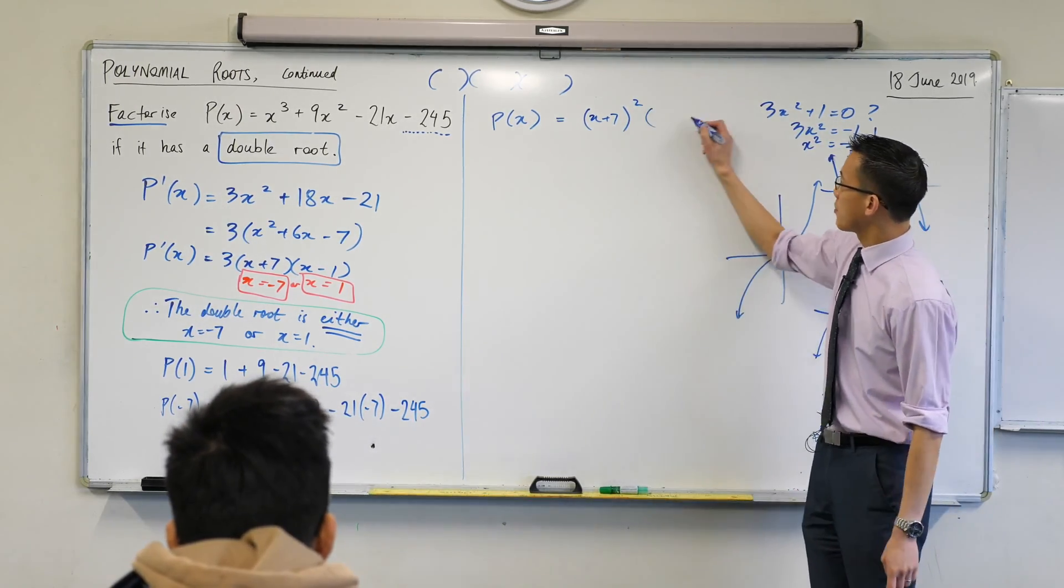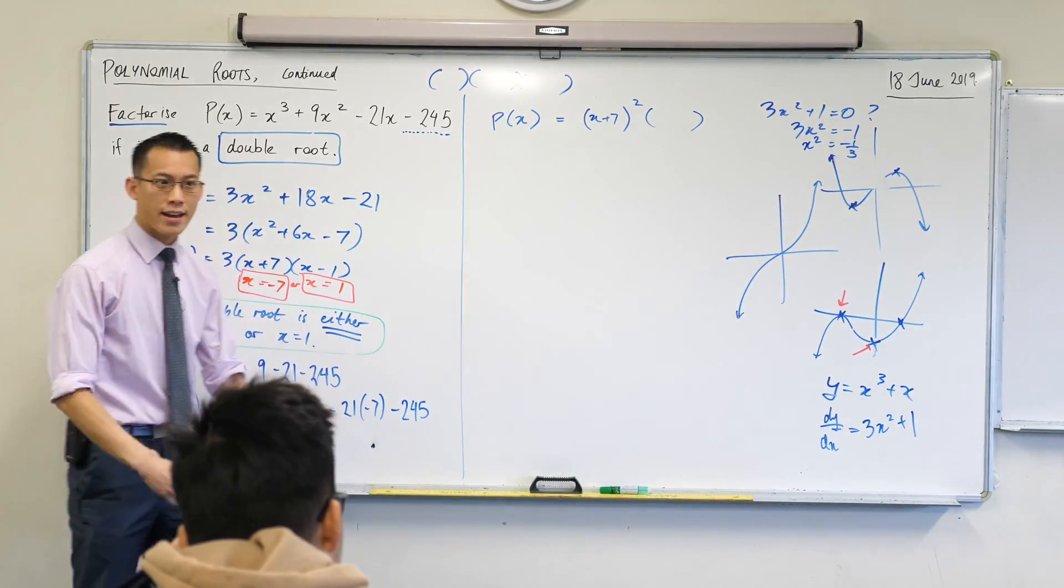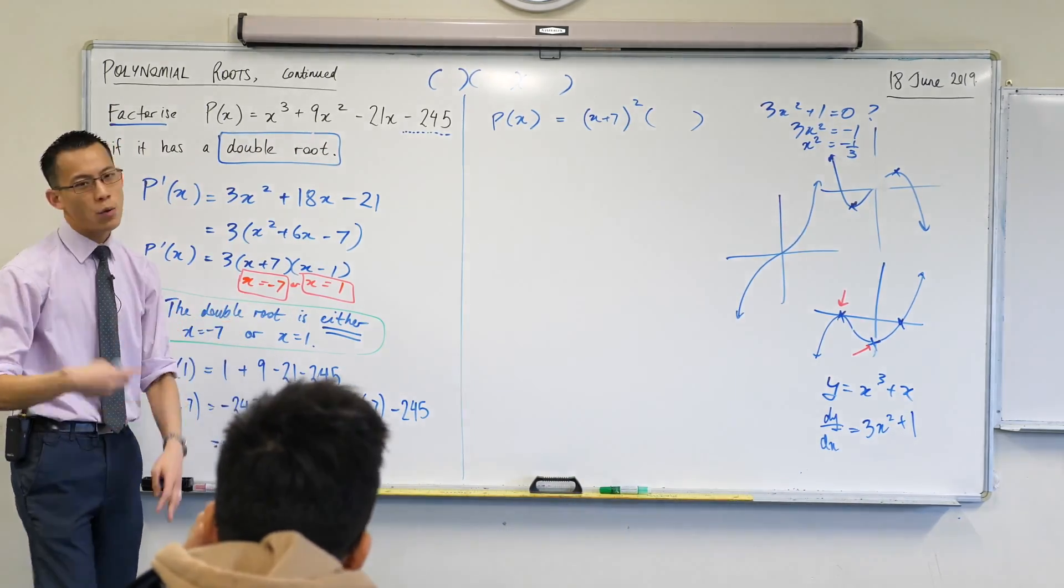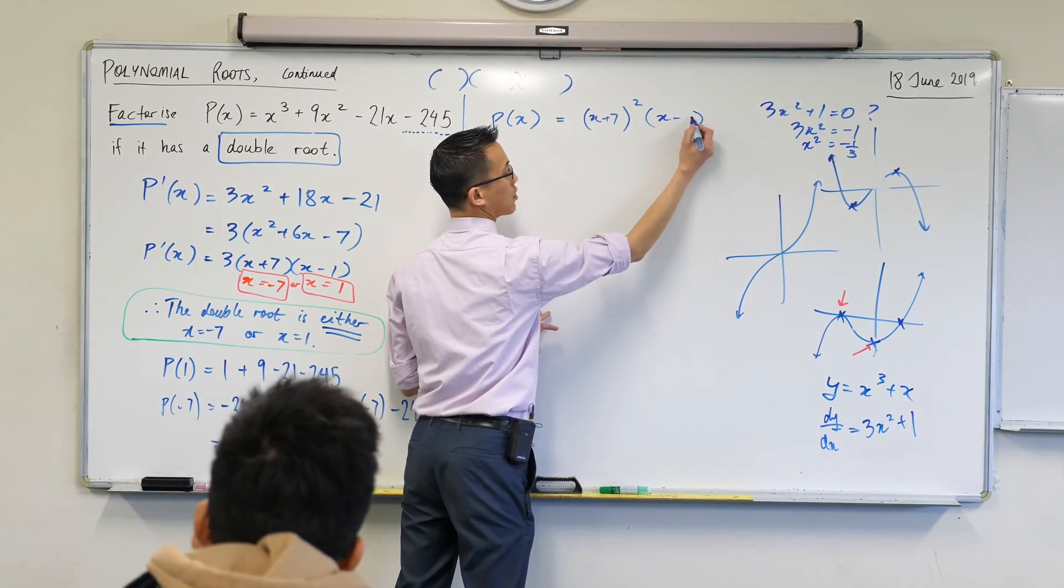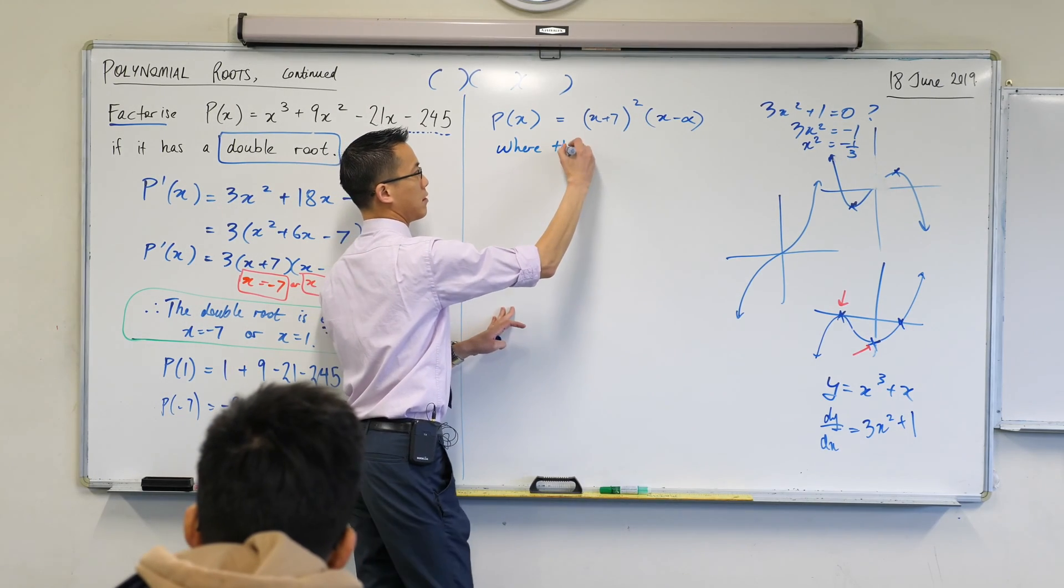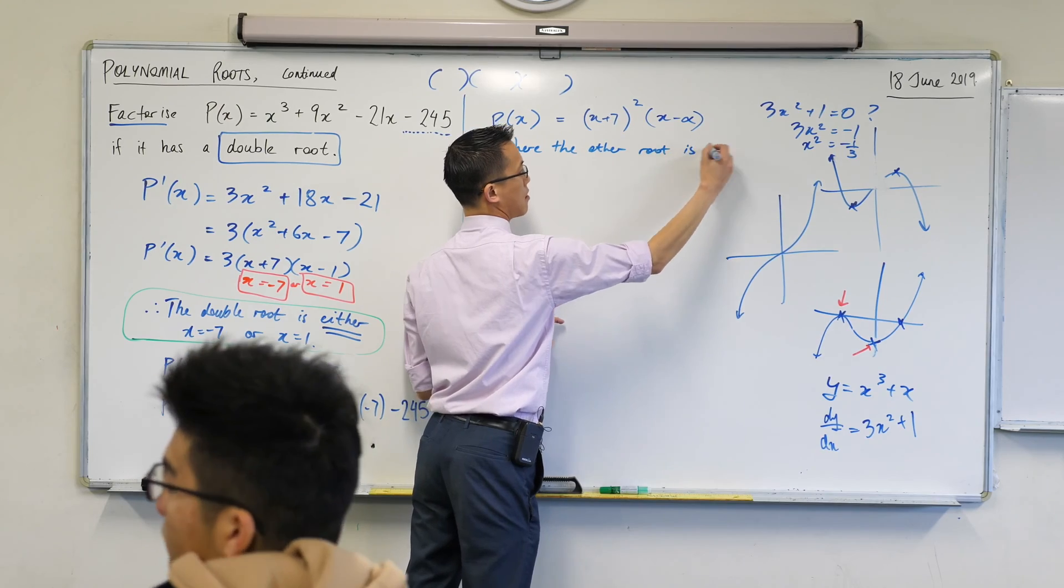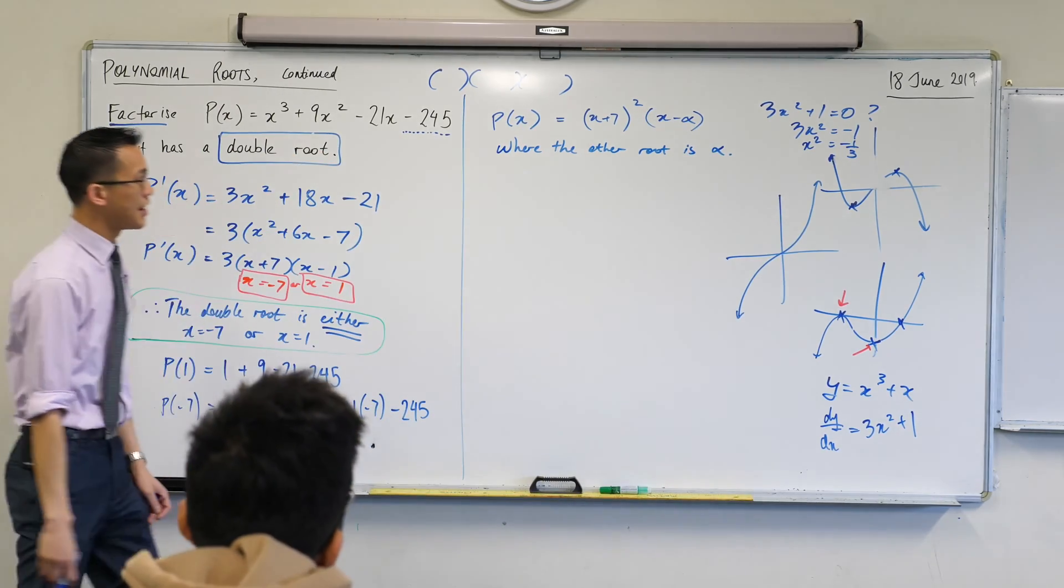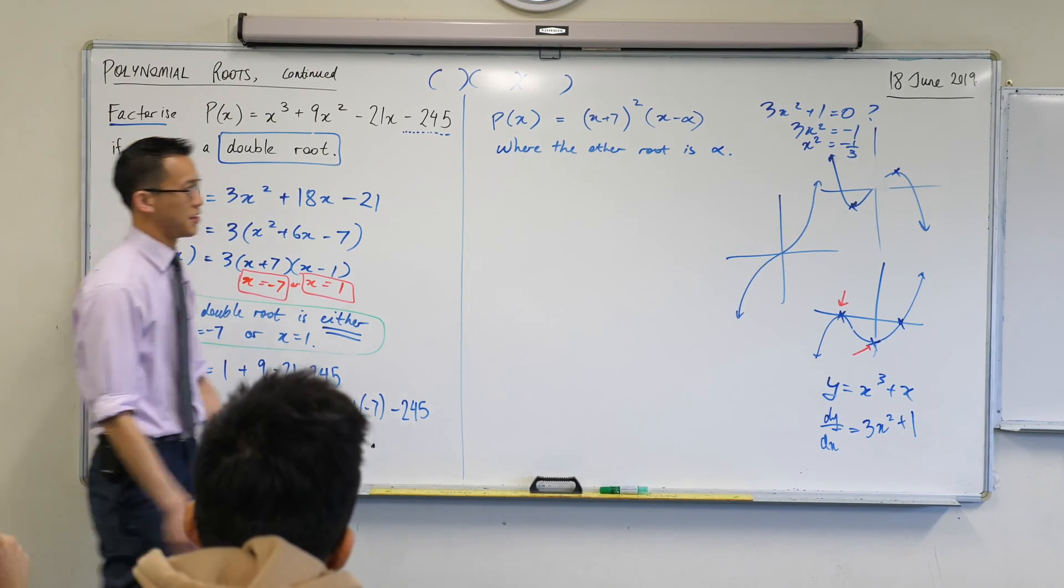And then there's going to be something else hanging on the end, okay? Now, I don't know what that is yet. I have some very good guesses, but I don't want to just guess and then see what happens. So because I don't know what it is yet, I'm just going to call it alpha, where the other root is alpha.